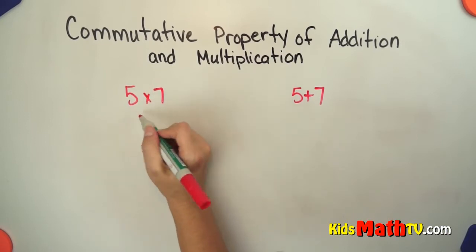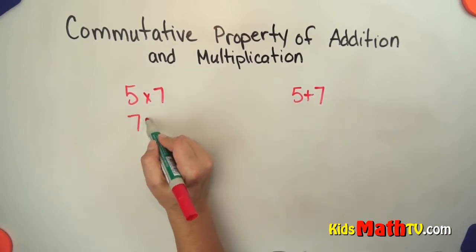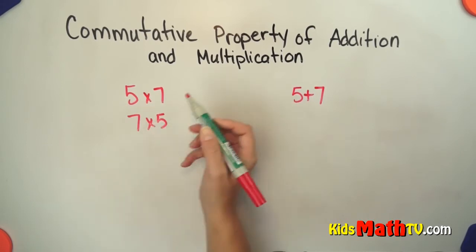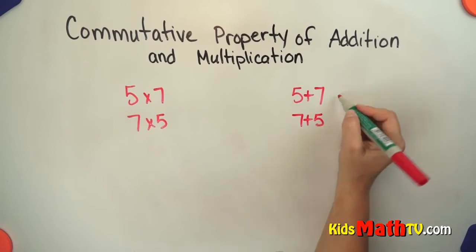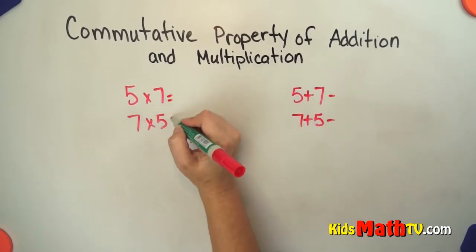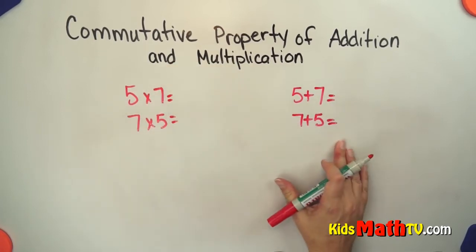No matter the order it will be the same. So if I have 5 x 7 or 7 x 5, or if I have 5 plus 7 or 7 plus 5, this should be the same. These two should be the same and these two should be the same.